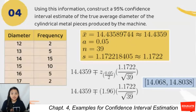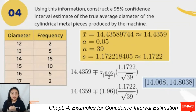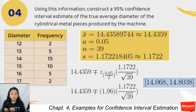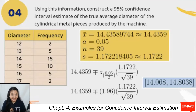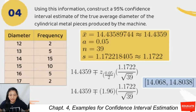Instead of simply adding the diameters, we multiply each diameter by its frequency: (12×2) + (13×5) + (14×15) + … + (17×2), then divide by the total sample size of 39. This gives approximately 14.4359. The 95% confidence level gives alpha = 0.05, n = 39, and s computed from the calculator is approximately 1.1722.